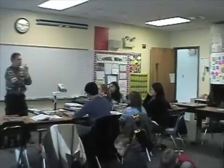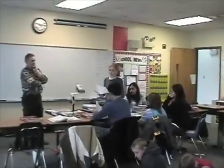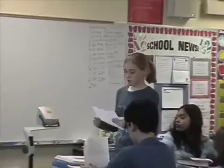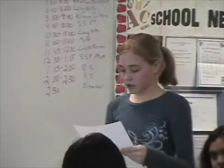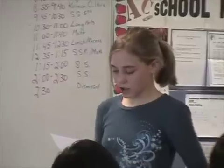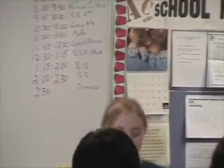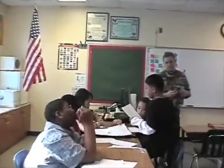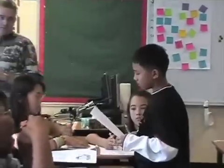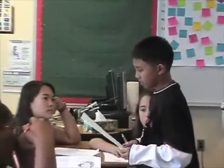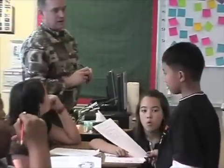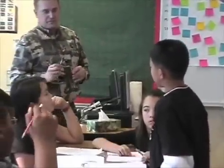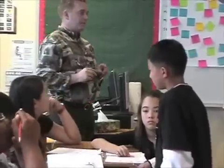Nicely done. Group three, take question number two, read it out loud, and give us the answer. What is the order of mathematical operations? The order of operations are parentheses, exponents, multiplication and division from left to right, addition and subtraction from left to right. Group two, would you read me the first question? Work the problems out that the college professor placed on the board. Did you work them out? Yes. Did you come up with the same answer he came up with? No. How come? He didn't follow the order of operations.